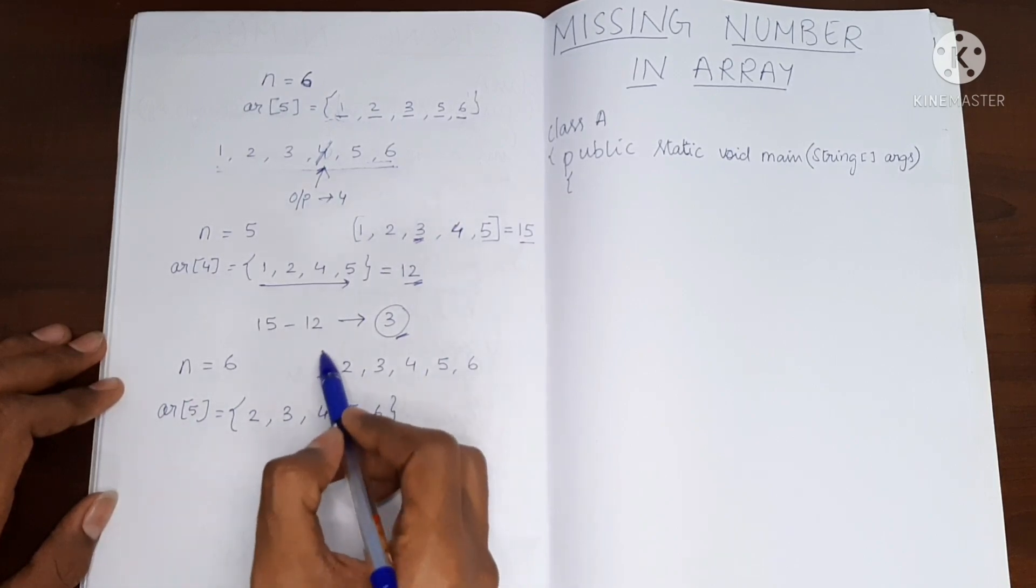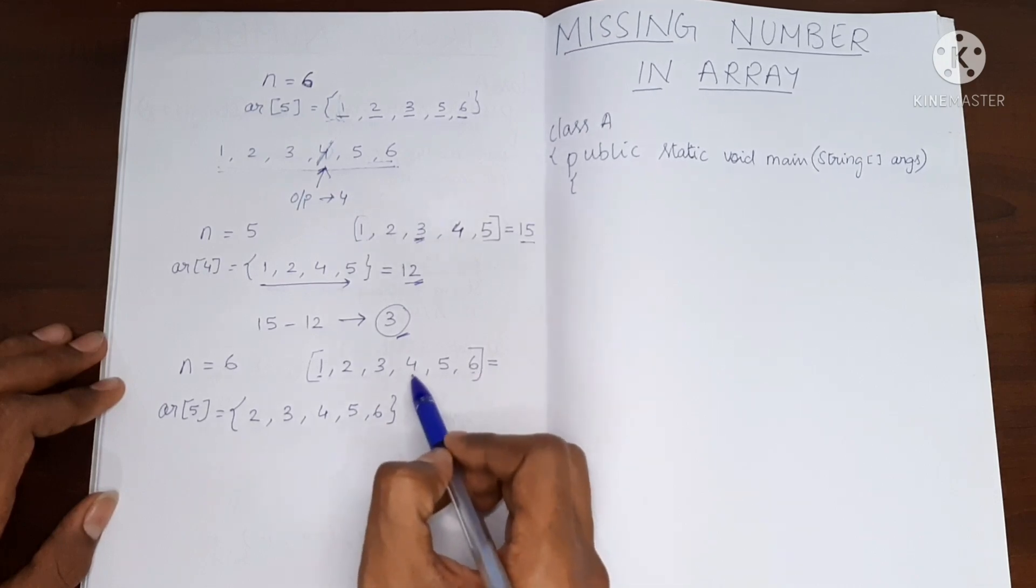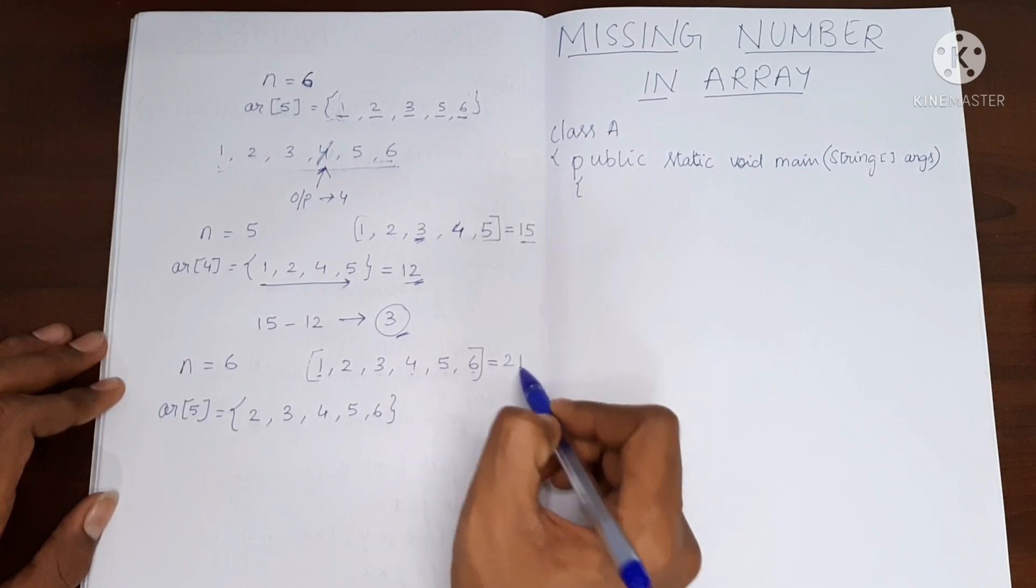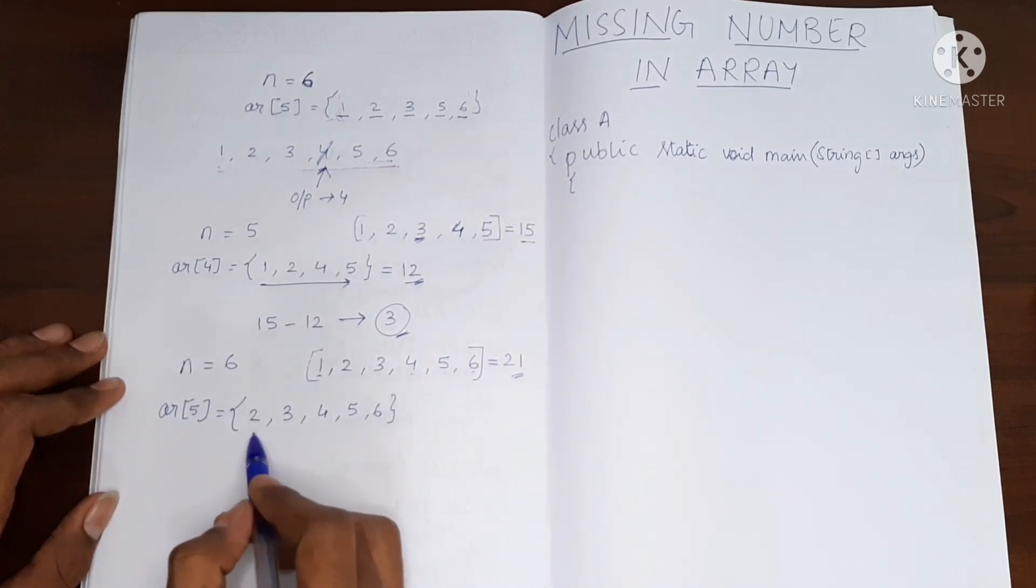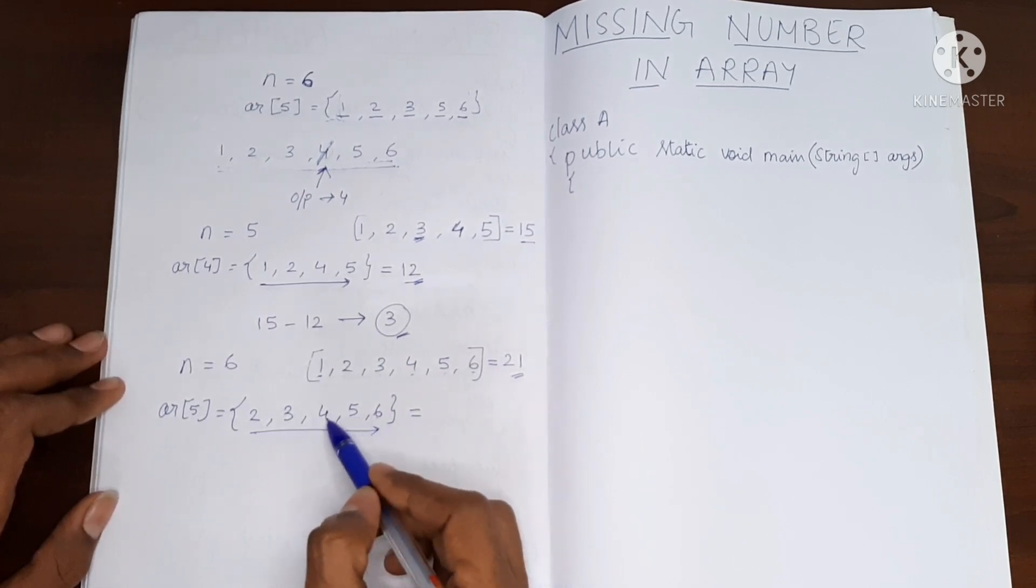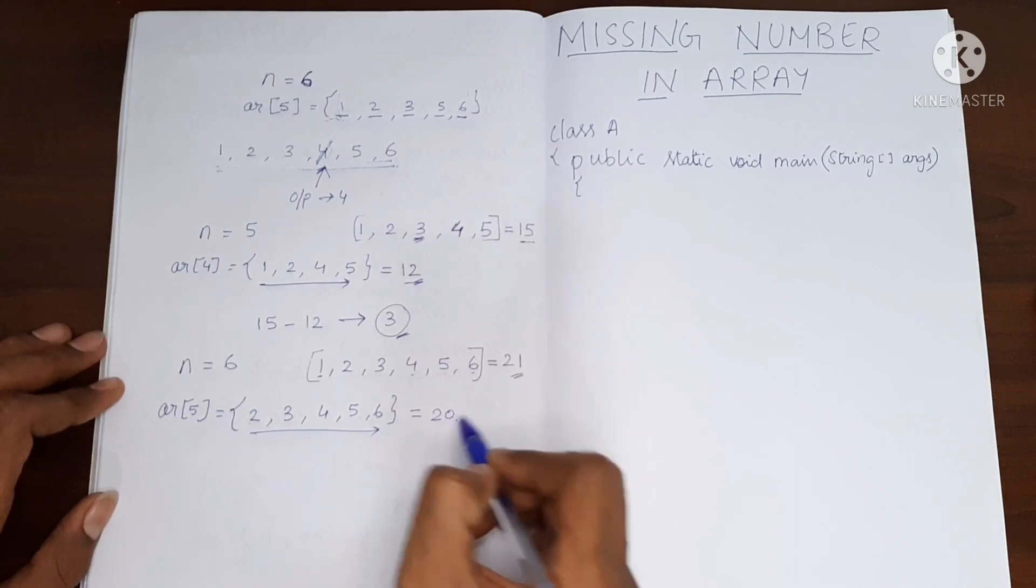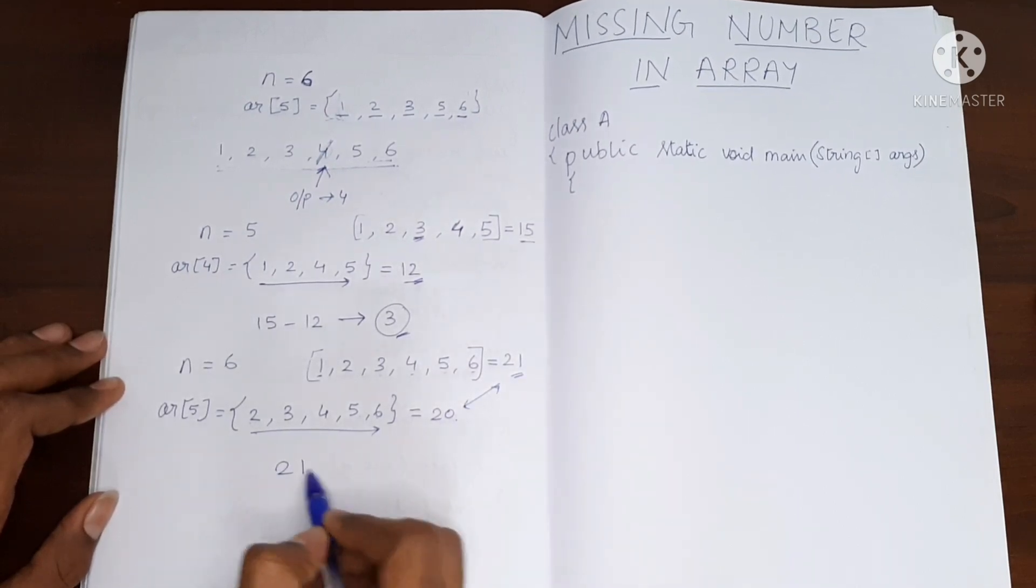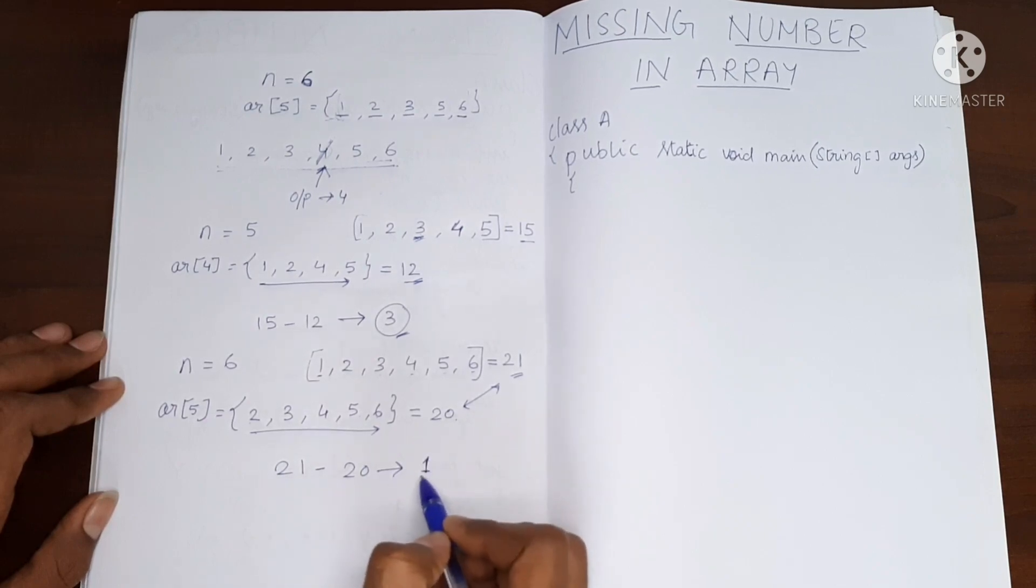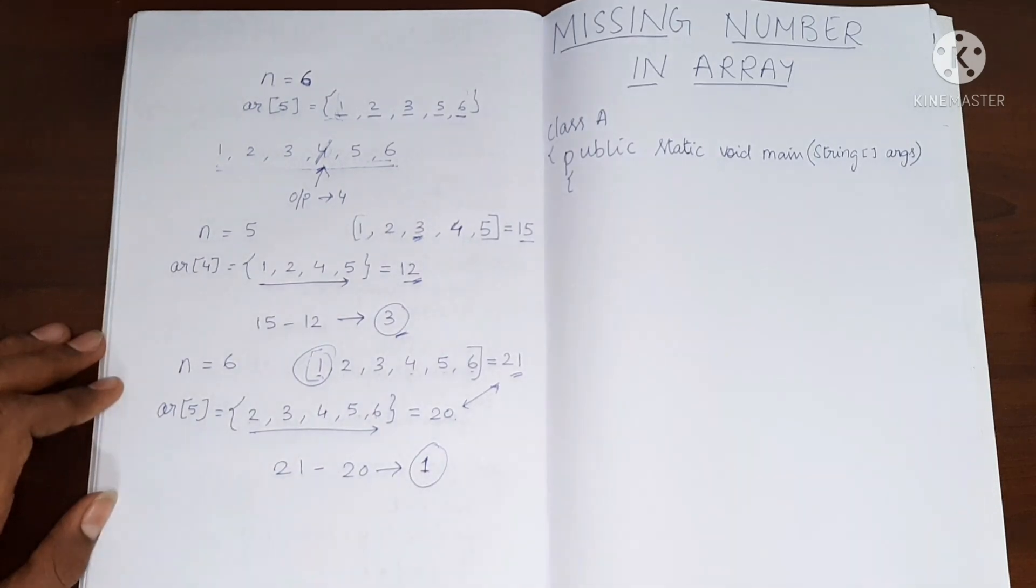So now let's find the sum of these. What will be the sum of these? It will be 6, 10, 15, 18, 20, 21. The result is 20. Now if you subtract these two, 21 minus 20, it will give you the result as 1. And you can see this is the value which is excluded.